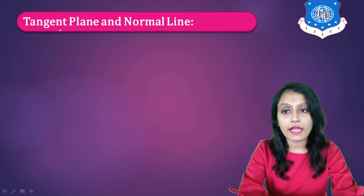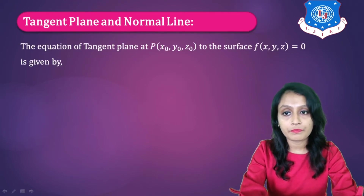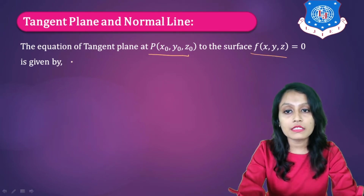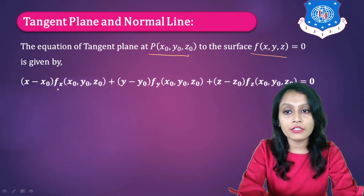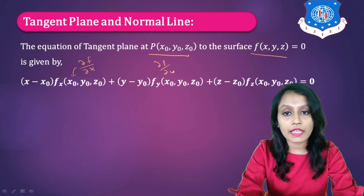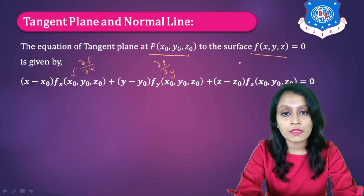Now let's see the method to find tangent plane and normal line. The equation of tangent plane at point P of (x₀, y₀, z₀) to the surface F(x, y, z) = 0 is given by: (x − x₀)·Fx at (x₀, y₀, z₀) plus (y − y₀)·Fy at (x₀, y₀, z₀) plus (z − z₀)·Fz at (x₀, y₀, z₀) equals 0, where Fx, Fy, Fz denote partial derivatives of F with respect to x, y, z respectively.